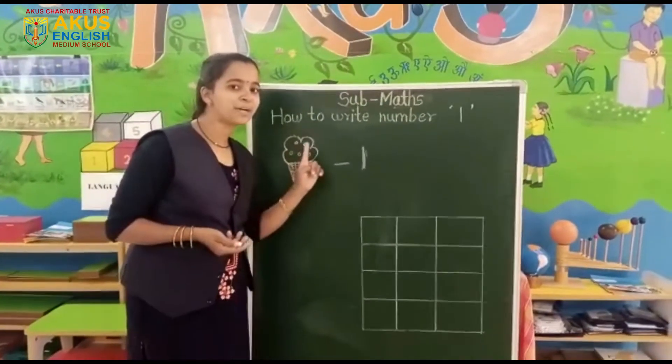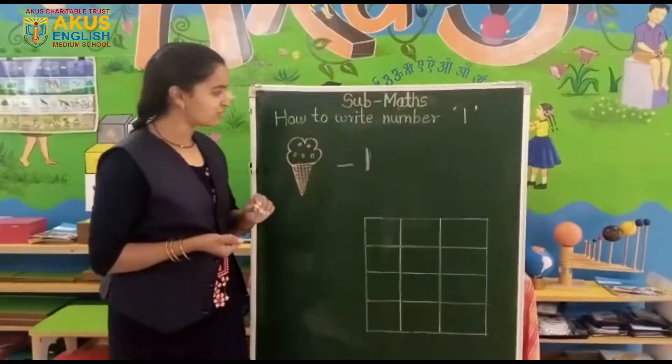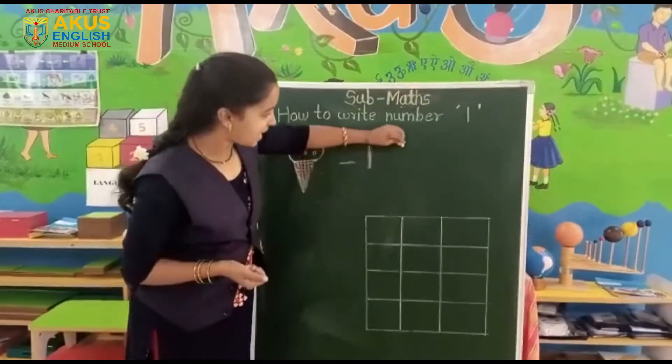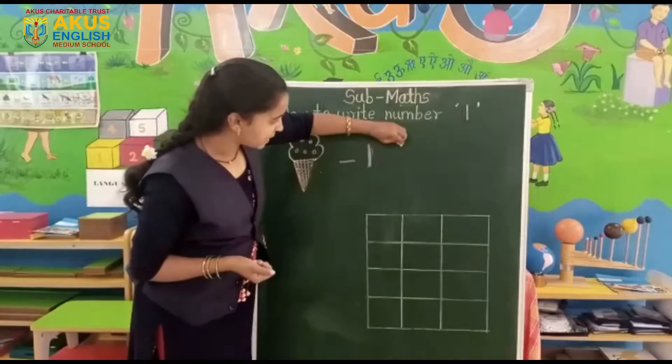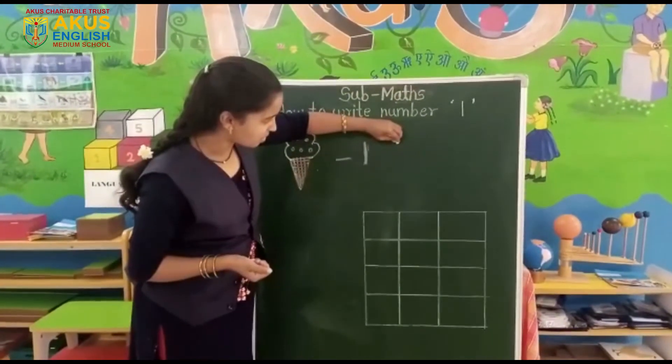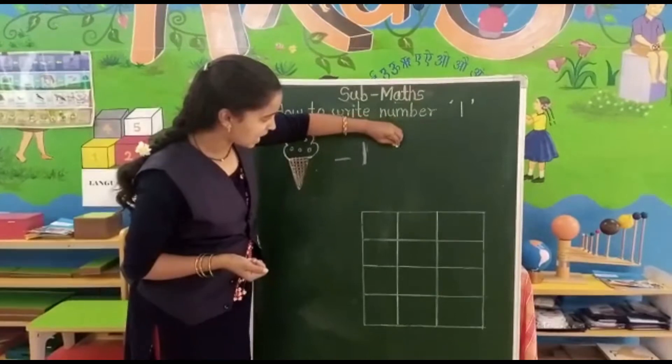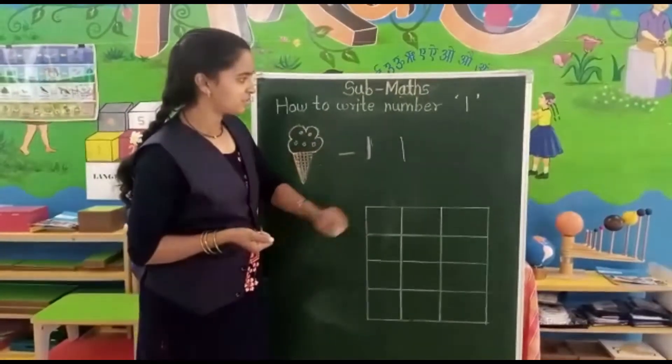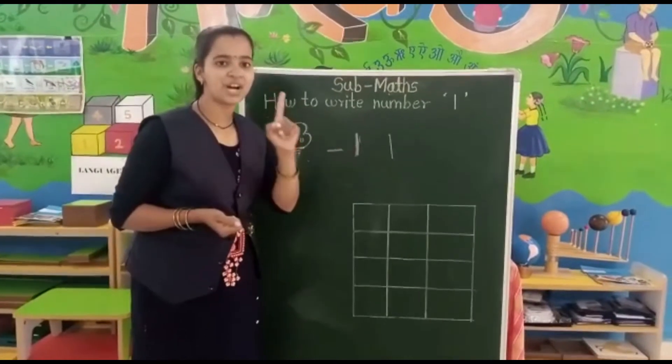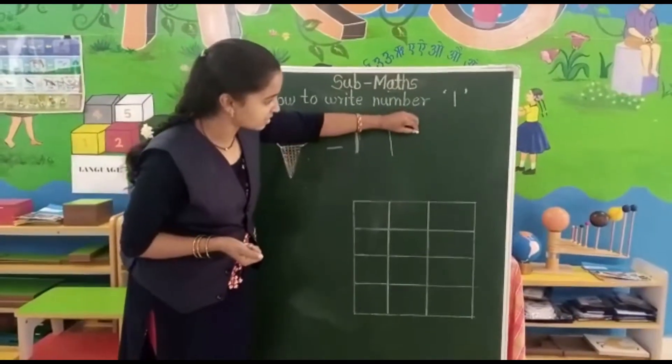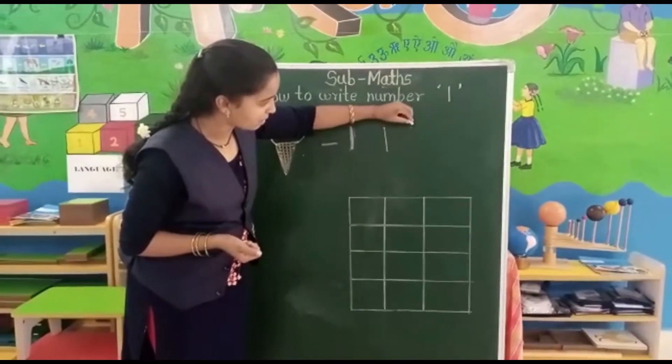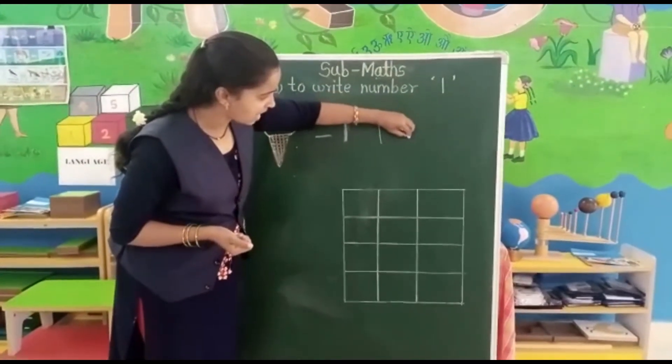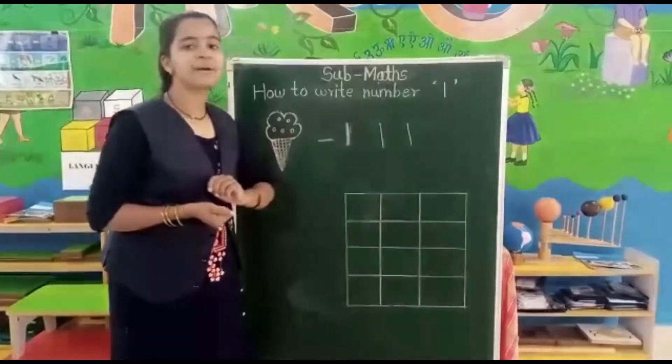How to write number 1? See here. First, all of you take a pencil in your hand and bring a line. Start from up to down like this. This is the number 1. Once again see here. Start from up, bring the line down side. This is the number 1.